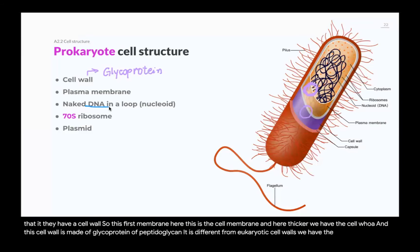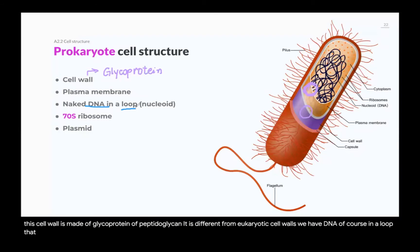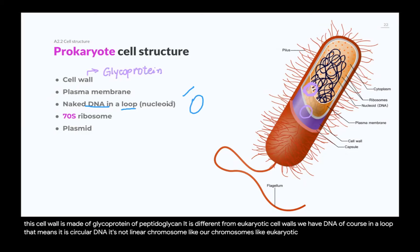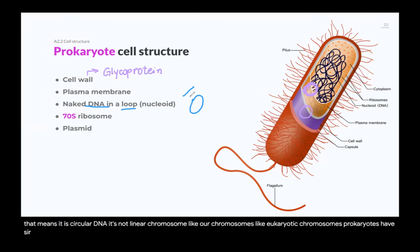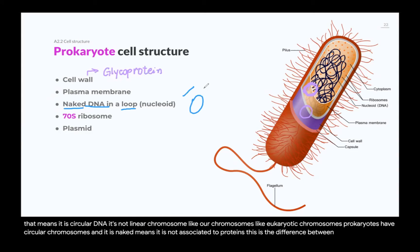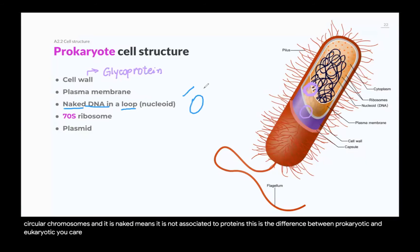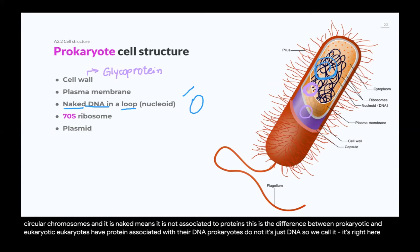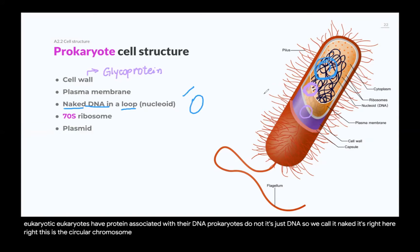Prokaryotes have DNA in a loop — that means it is circular DNA, not linear chromosomes like eukaryotic chromosomes. Prokaryotes have circular chromosomes, and the DNA is naked, meaning it is not associated with proteins. This is a key difference from eukaryotes, which have proteins associated with their DNA. It is just DNA — so we call it naked — right here, the circular chromosome of prokaryotes.